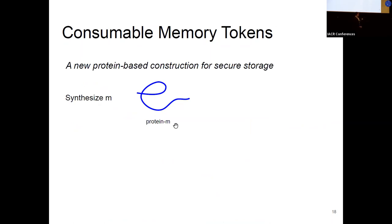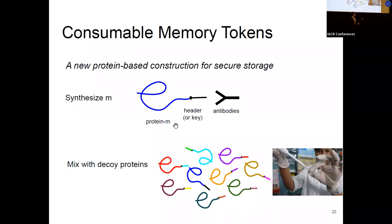Based on these observations, we develop a construction for what we call consumable memory tokens. And as before, we transform the digital message into protein. But we connect this protein with a shorter protein sequence that is called a header, which is recognized by the matching antibodies. So knowing the header, which, by the way, can be represented as a digital description, you can determine the matching antibody. And this header is the secret key for us. Then we mix this target protein with a massive set of decoy proteins that are connected to other random keys. And the mix, which is in the vial that our co-author Anna is holding here in this figure, is our consumable token.